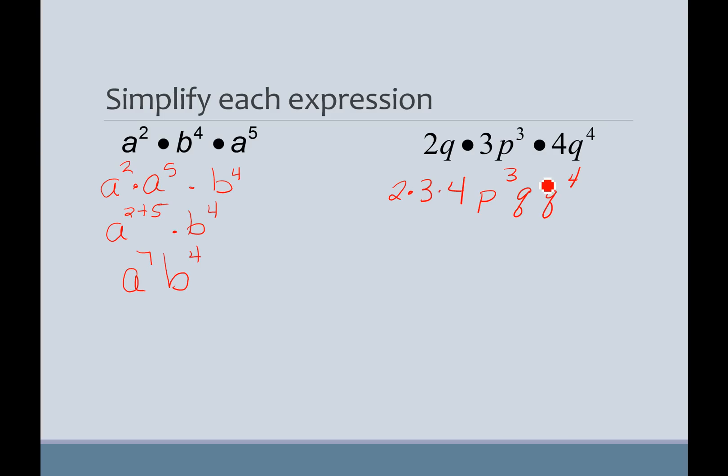Again, there's no exponent on this first Q, so that's the same as Q to the first power. So, if I multiply 2 times 3 times 4 is 6 times 4, 24. And then P cubed, Q to the 1 plus 4. So, now that's going to give me 24 P cubed, Q to the fifth.